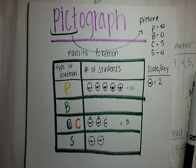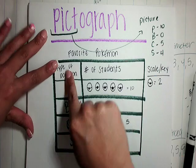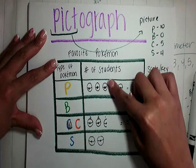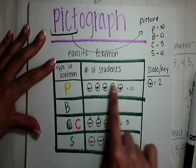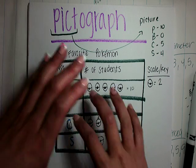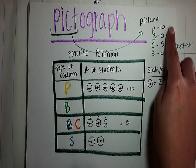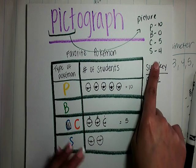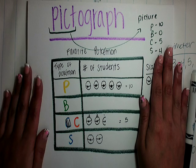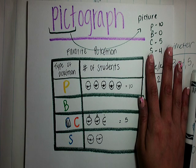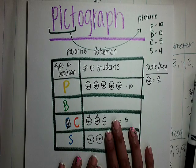So we have our title for the whole graph, our title for this column, our title for this column, our key, our categories listed, and the data already input. This is literally a way for us to present numbers in a nicer way than just writing them out. Now your job is to take some of the data we've been using all week — any of those five or six categories — and do a pictograph today.